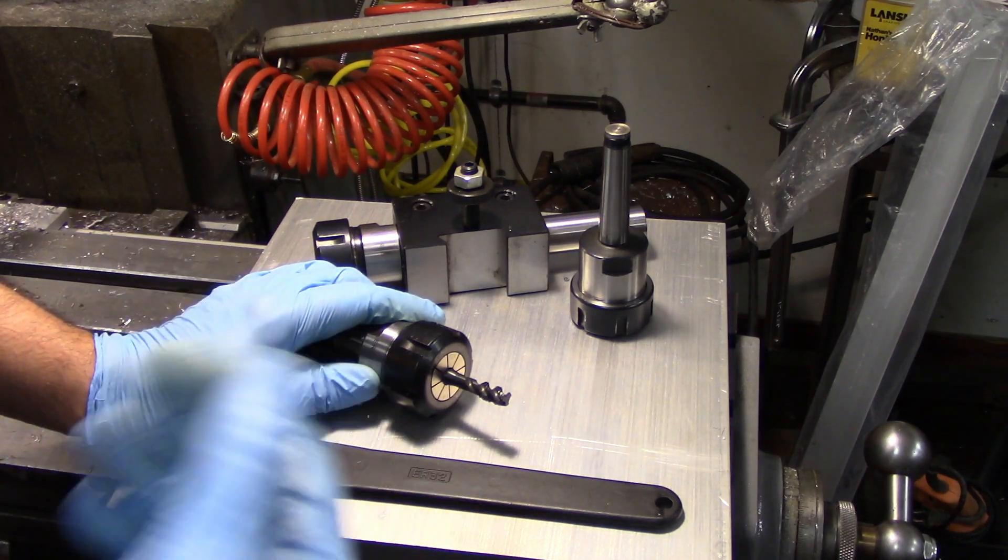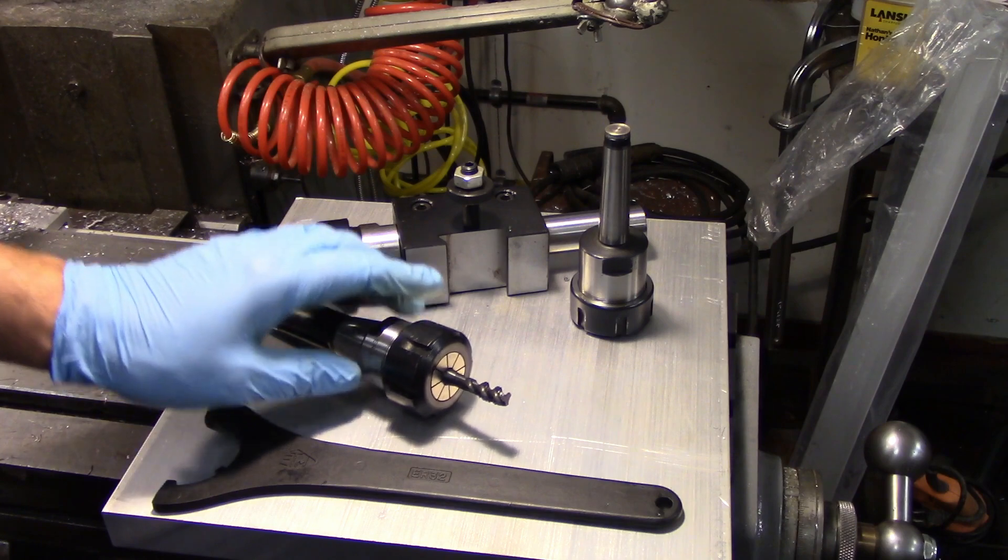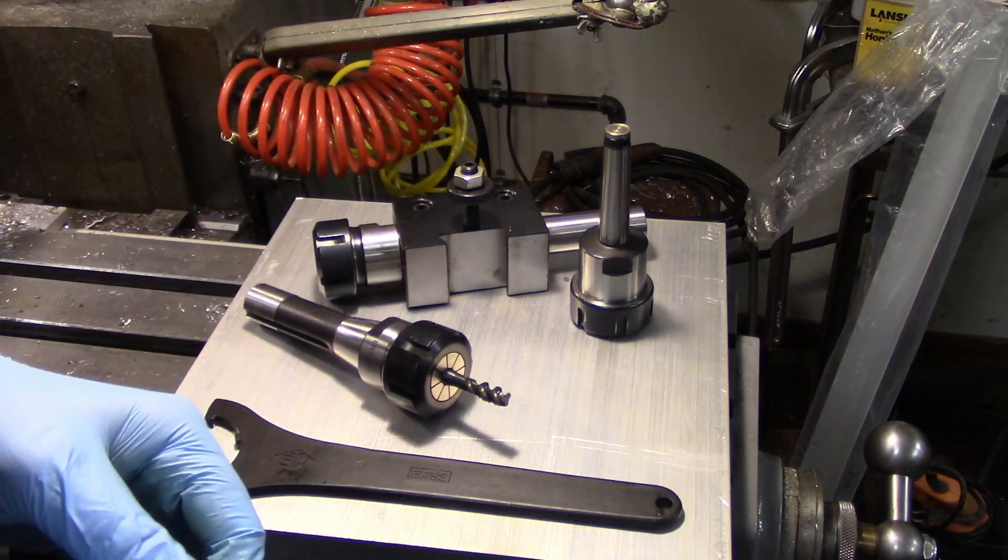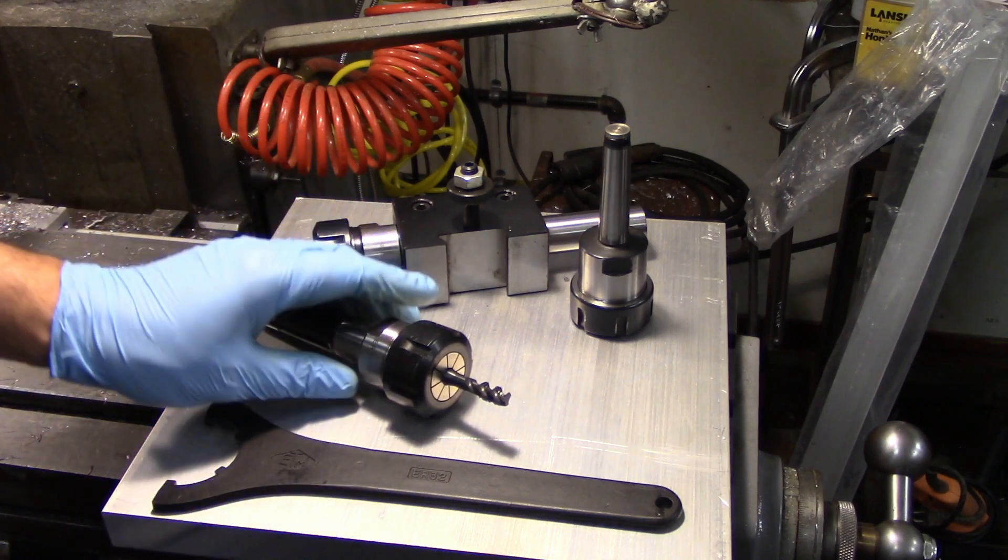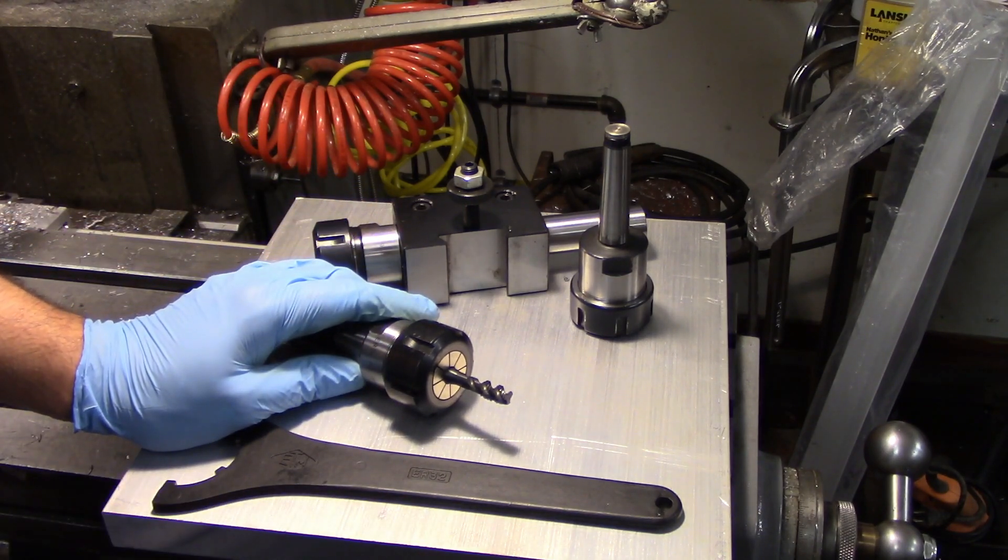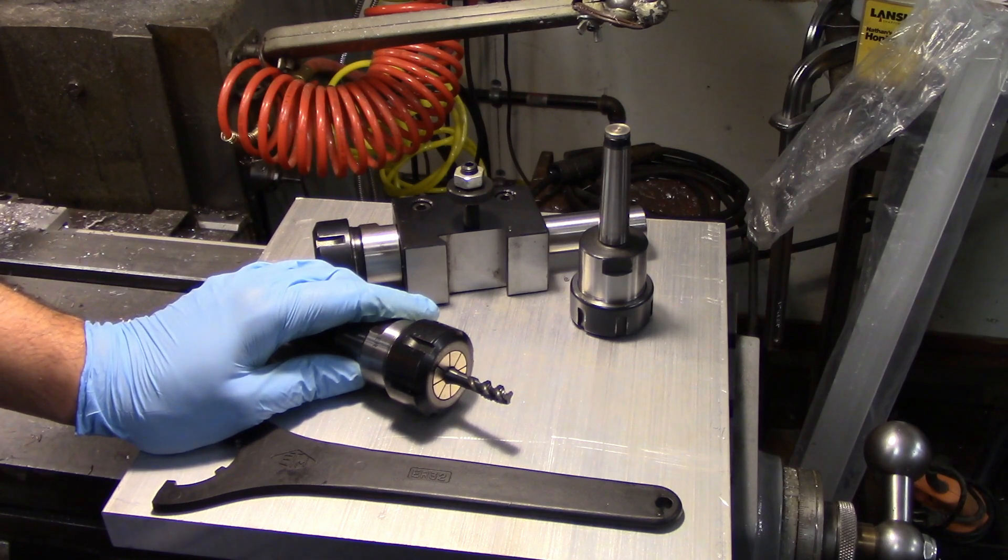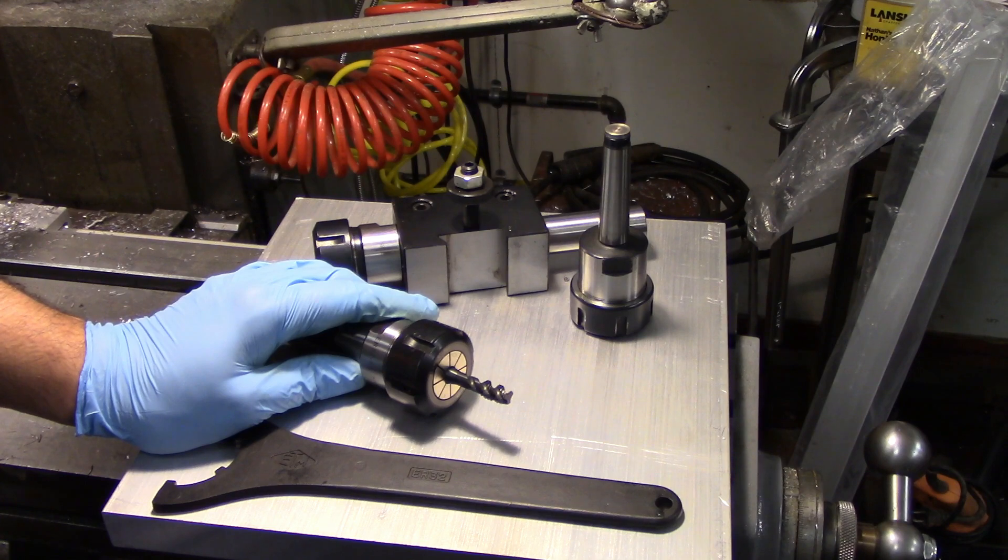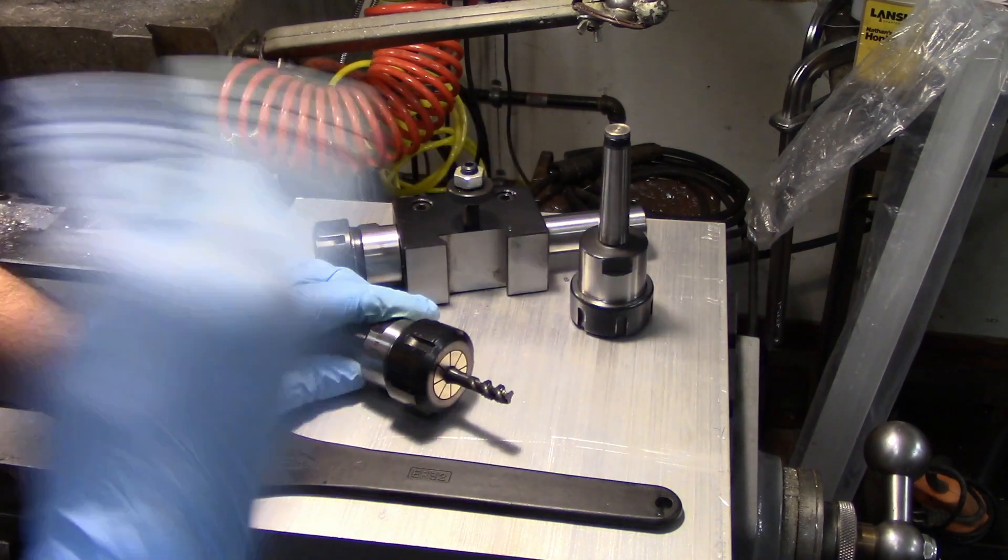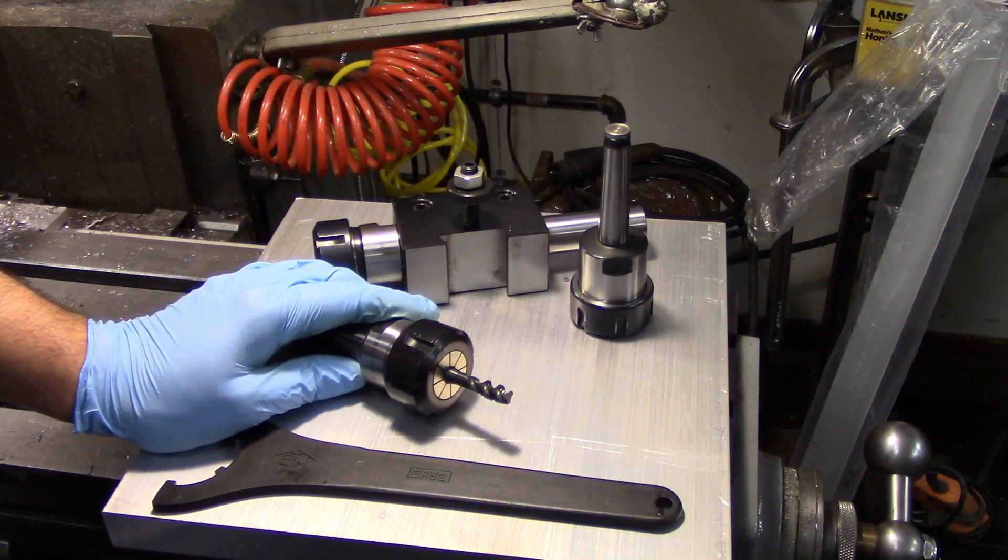So I got the ER collet chuck because I could get one of these straight shank holders for around a hundred dollars and it was a pretty fantastic tool to use. I used it for many years until I got the 5C collet chuck on my lathe. If I had to do that over again, I probably would have gone back in time, slapped myself around a little bit, and told myself to get an ER40.